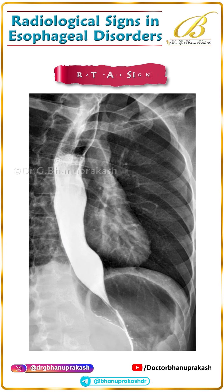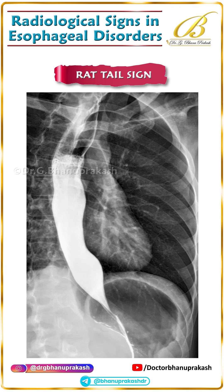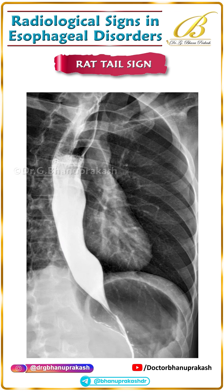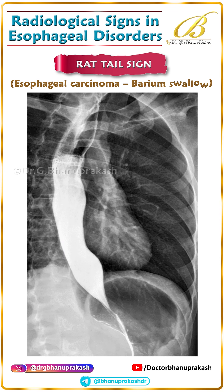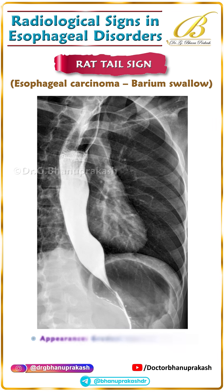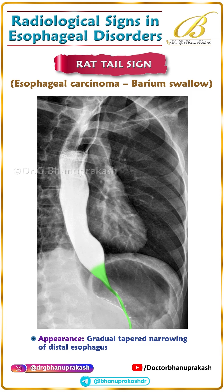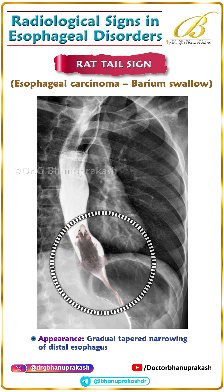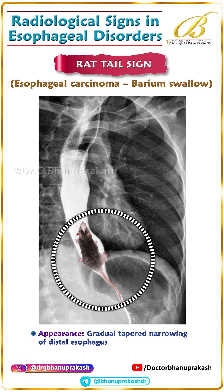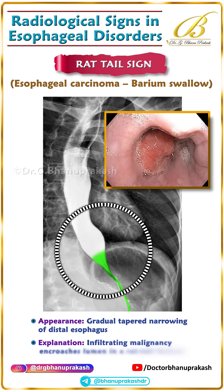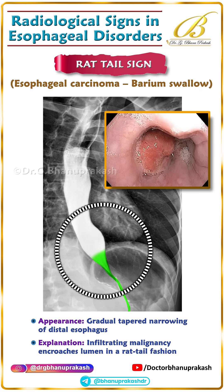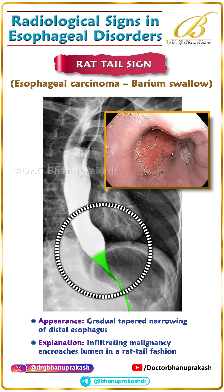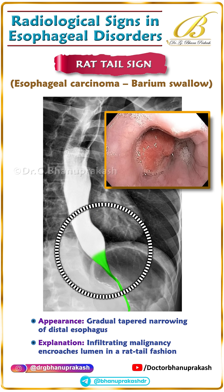Next, the rat tail sign. This is a hallmark of esophageal carcinoma. Here, the barium swallow shows a long, irregular tapering of the distal esophagus resembling a rat tail. It is produced by an infiltrating cancer gradually narrowing the lumen.